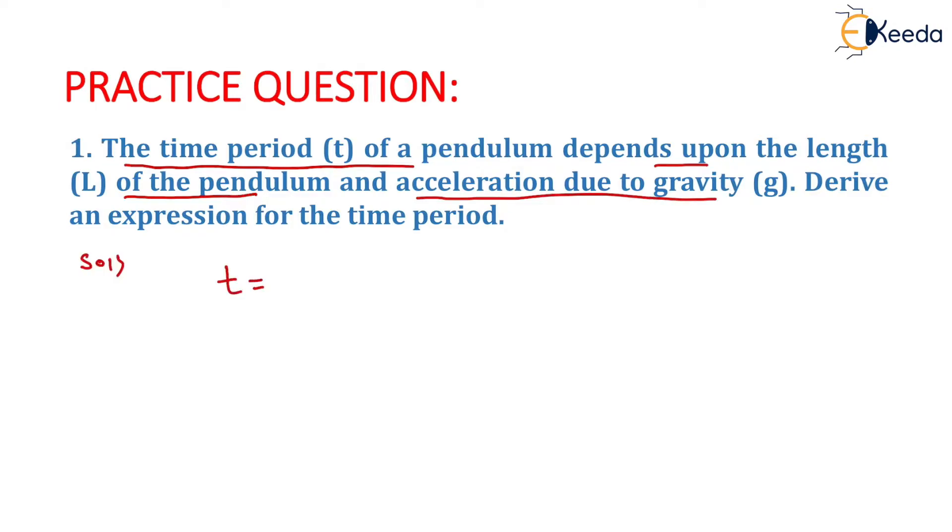Now we know that time period is a function of length of pendulum and acceleration due to gravity. So we can write t = k·L^a·g^b.